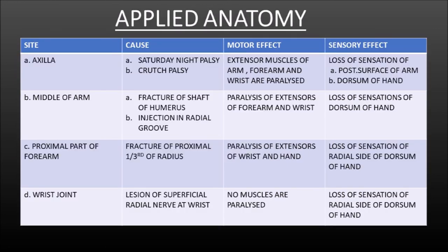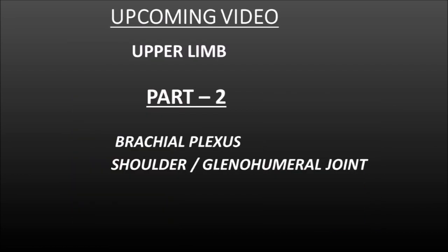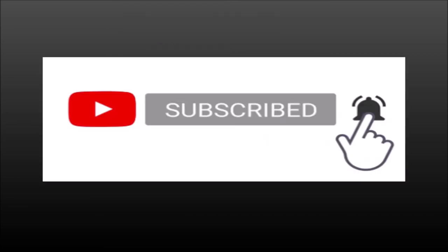Now we will finally discuss the applied anatomy. This table clearly explains in detail about the site, the cause, the motor effect and the sensory effect, covering the axilla, middle of the arm, proximal part of the forearm and the wrist joint. It is very important to remember the wrist joint because it is the only place where there is no motor effect — no muscles are paralyzed in case of injury at the wrist joint. The first picture shows crutch palsy and the second picture shows Saturday night palsy, both caused by injury to the radial nerve at the axilla. In our next lecture, we will be covering the remaining two essays which are the brachial plexus and the shoulder or glenohumeral joint. Please like our video, subscribe and click on the bell icon to get updated with further lectures.